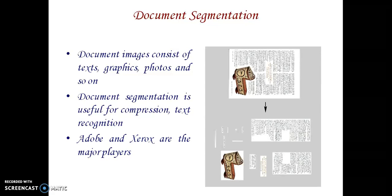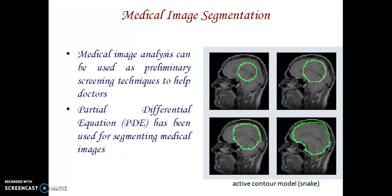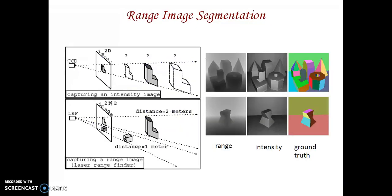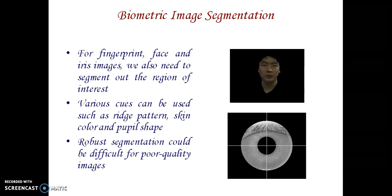For document images, in a particular document there are some images present — I want to neglect the text and extract only the images. For medical images, we identify the abnormal region by applying partial differential equations, snake-based vectors, support vector machines, or other algorithms. An active contour model is used to identify the image region. For range-based images, I identify the ranges of a particular image. For biometric images — like fingerprint and iris images — we also need to segment those regions to identify the biometrics of a particular person.